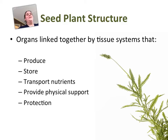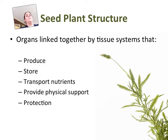Seed plants are linked together by tissue systems that do all of the work. They produce hormones, they produce sugars, everything that the plant needs. They store all of those items. They can transport nutrients, provide physical support, and also provide protection. We'll hit on a couple of those as we talk about each different type of tissue.